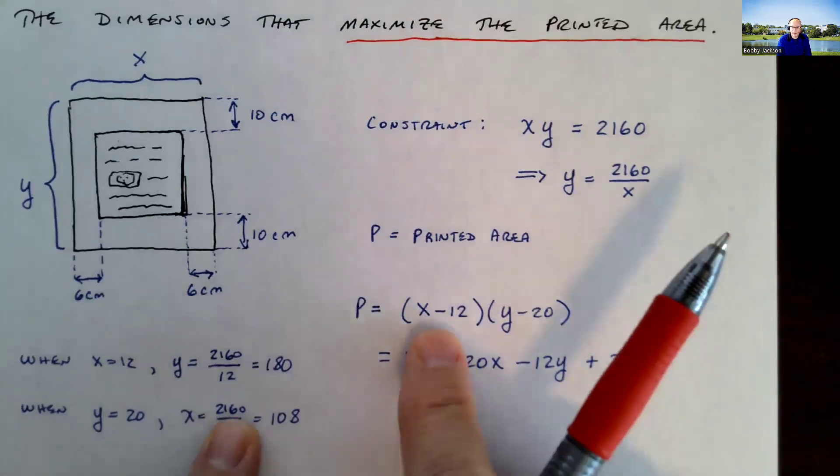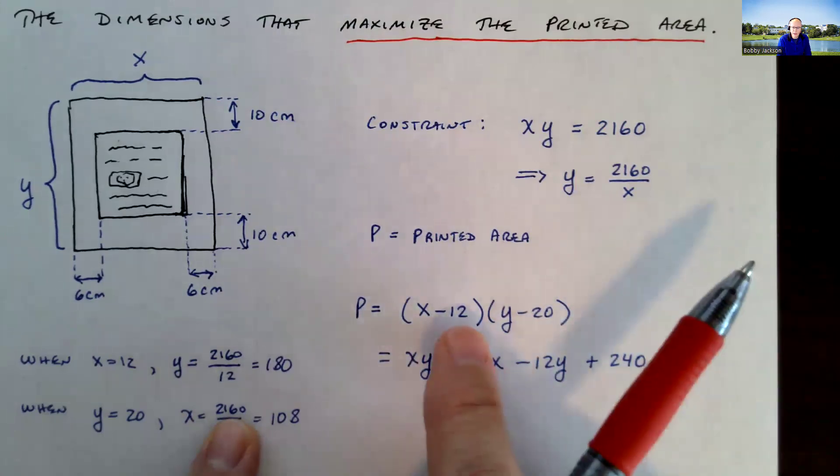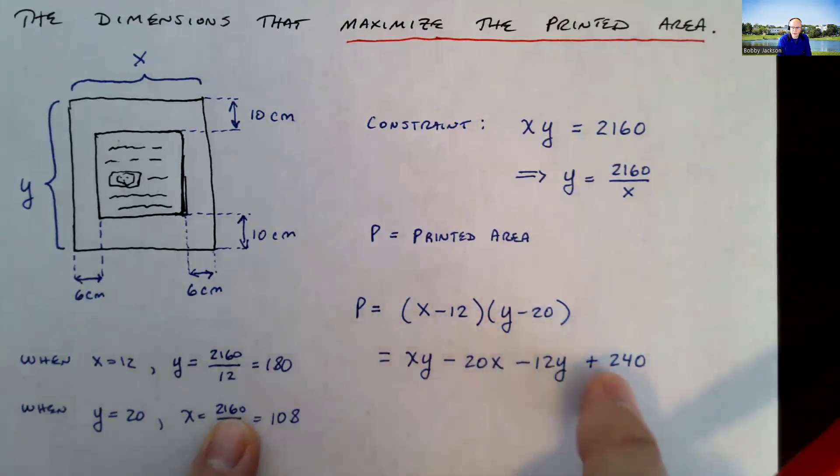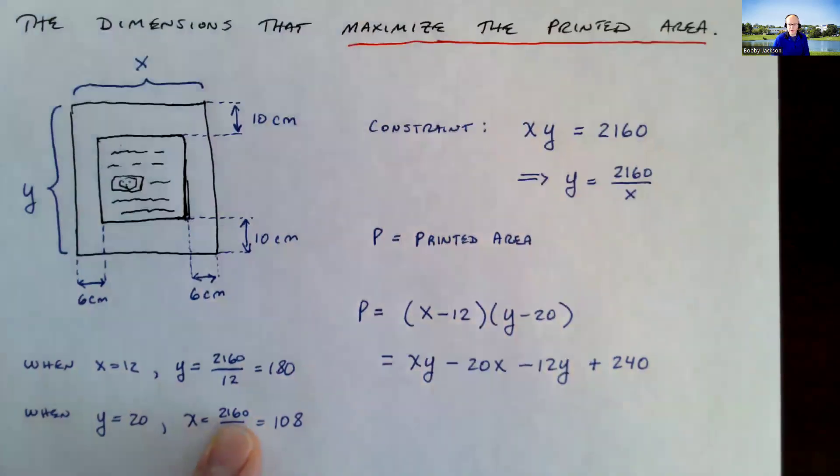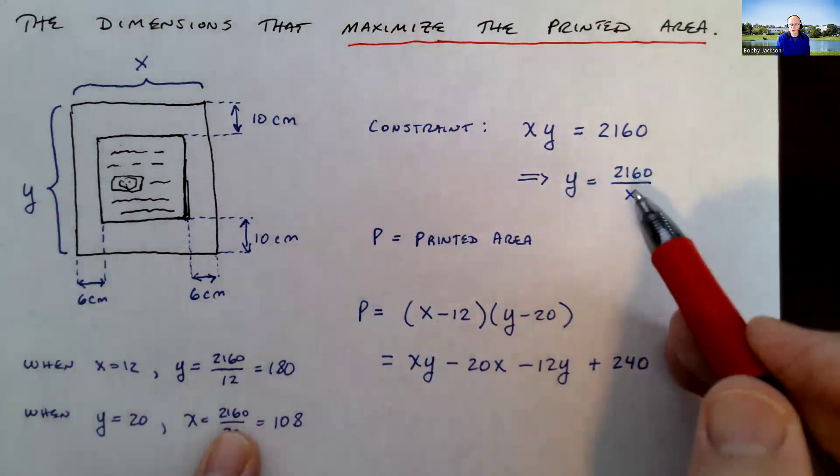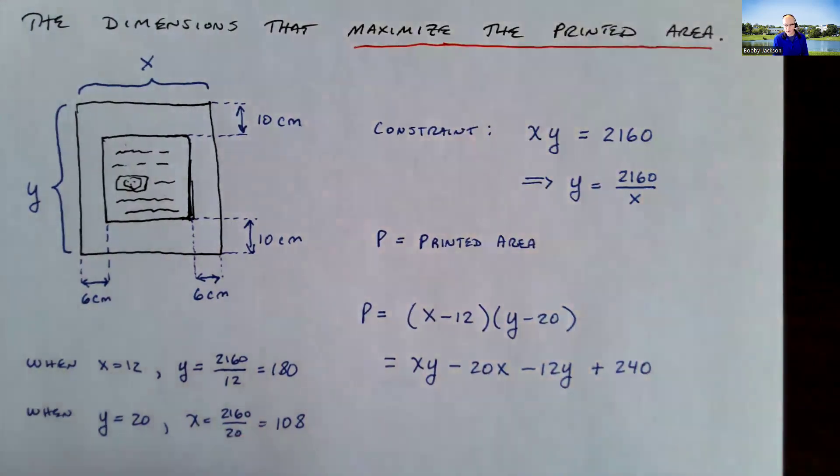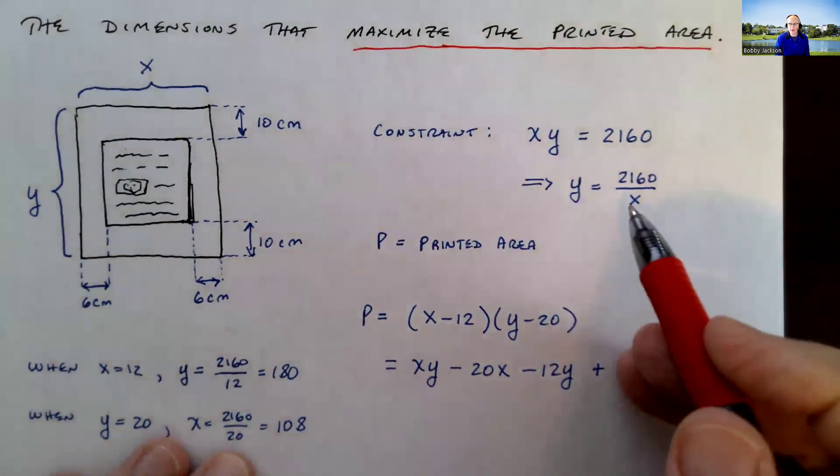So let's go ahead and follow this out. x times y, outer, negative 20x, inner, negative 12y, last, negative, times negative, positive, 240. So this is what I want to maximize. It's a function of two variables. I want to get it to be a function of one variable. So I'm going to substitute in y equals 2160 divided by x. But I want to talk about the restraints or constraint on x that we have, what's feasible for x.